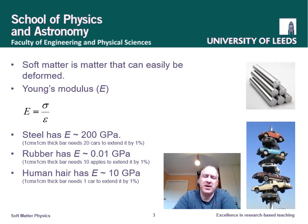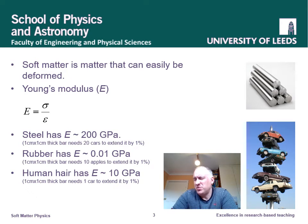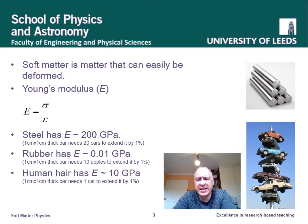So when we say soft matter, what on earth do we mean? I can't do much better than saying it's matter that is soft — matter that you as a human can deform and squidge and change its shape. That sounds a bit vague, doesn't it? So let's make it a bit more quantitative. How can we quantify how easy it is to deform a material?